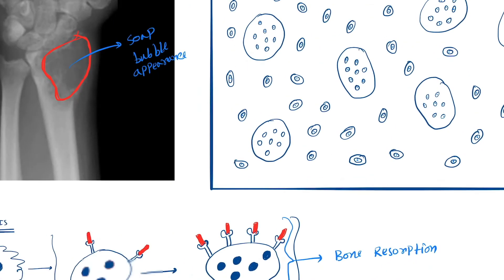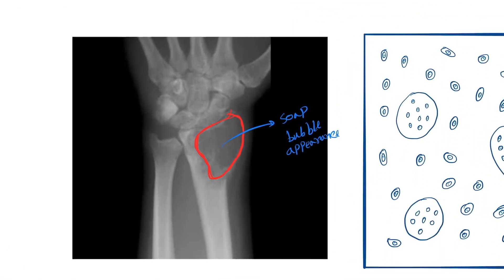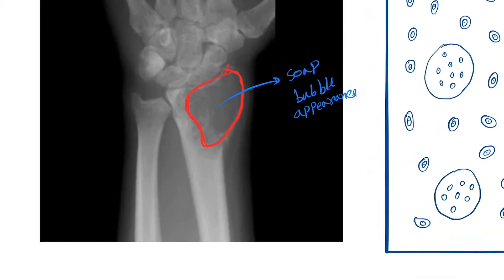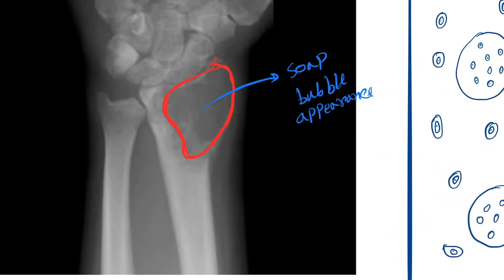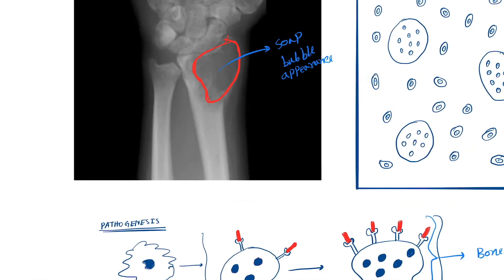Now come to the gross and morphological features of the giant cell tumor. Gross features include a large tumor, clearly circumscribed, that frequently undergoes cystic changes. You can see here this large area.